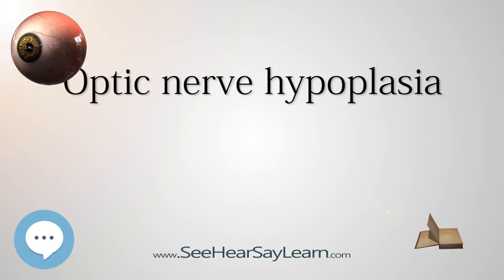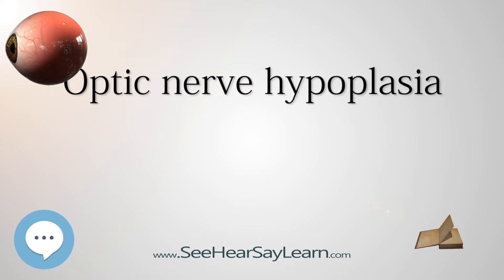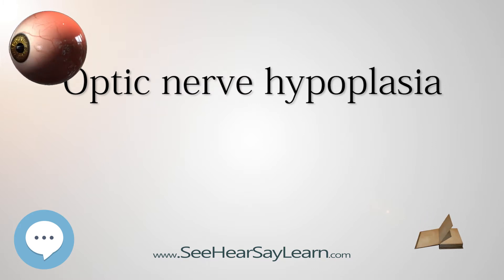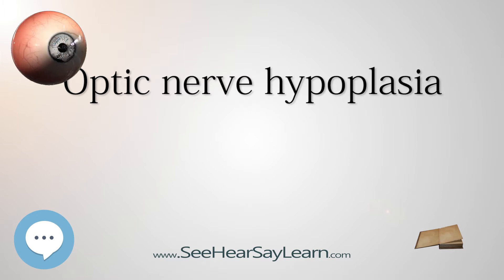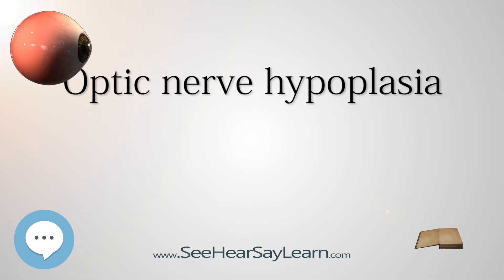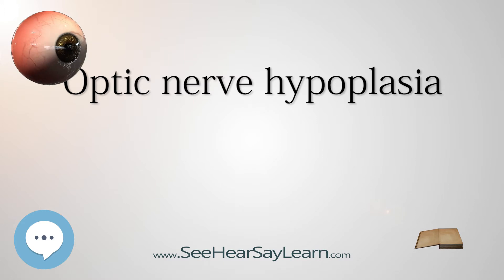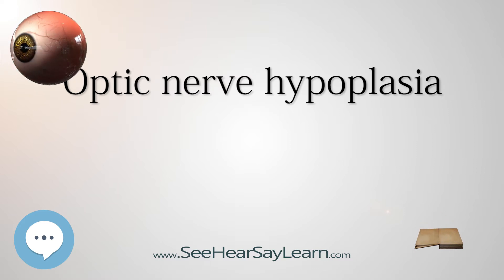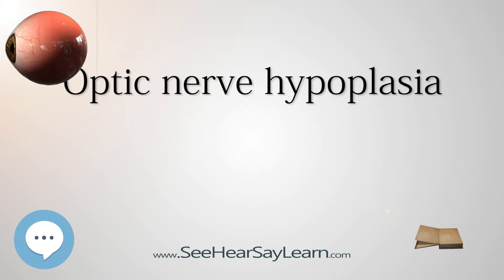ONH is diagnosed by ophthalmoscopic examination. Patients with ONH exhibit an optic nerve that appears smaller than normal and different in appearance from small optic nerves caused by other conditions such as optic nerve atrophy. The DM/DD ratio has proven to be a clinically useful measurement, where DM represents the distance from disc to macula and DD represents disc diameter. The mean disc diameter (DD) is the vertical diameter plus horizontal diameter divided by two, and DM is the distance from the center of the disc to the macula. When the ratio of DM to DD is greater than 3, ONH is suspected; when greater than 4, optic nerve hypoplasia is definite.